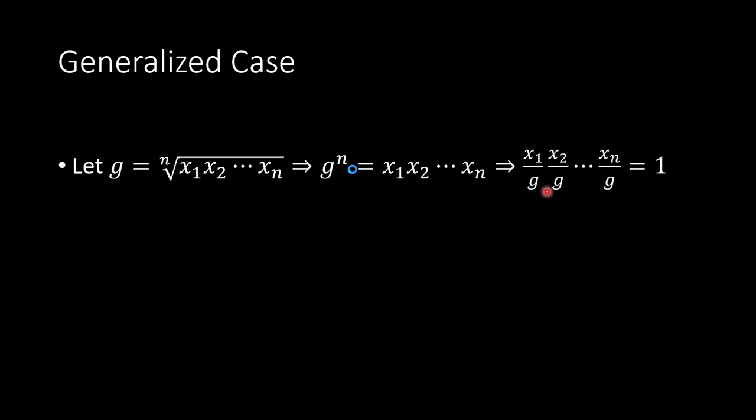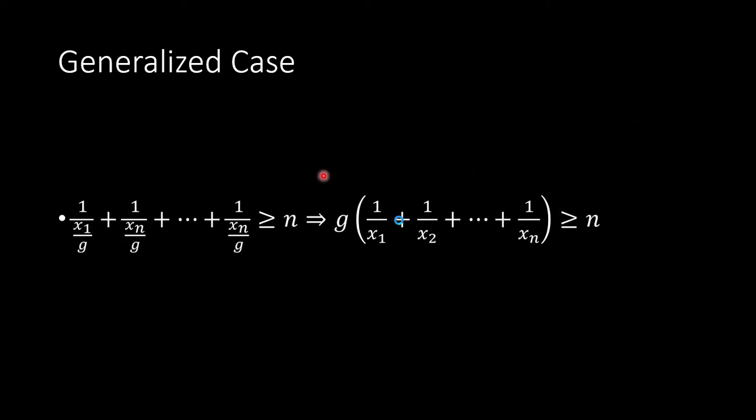Then we now consider x1 divided by g, x2 divided by g, these n numbers. Their product is 1. Therefore, we have from the lemma: